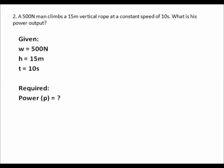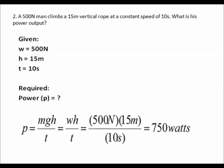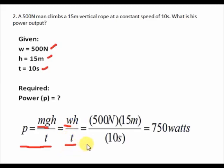For problem number two, a 500-newton man climbs a 15-meter vertical rope at a constant speed in 10 seconds. What is his power output? The given data are: weight W equals 500 newtons, height H equals 15 meters, and time T equals 10 seconds. Since all data are in correct units with nothing to convert, we can directly compute using P = M·G·H/T, where Mg equals 500 newtons, multiplied by 15 meters, divided by 10 seconds, giving an answer of 750 watts.